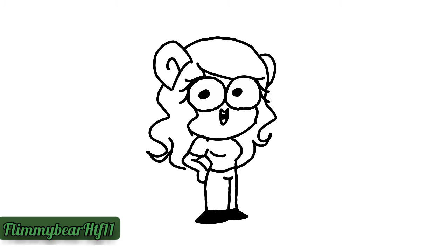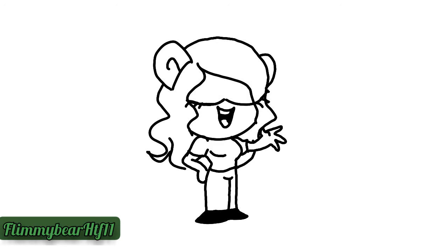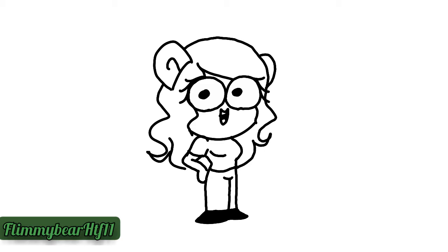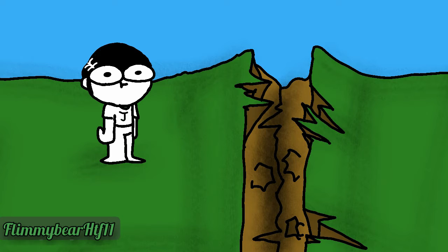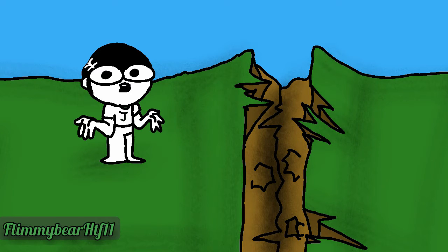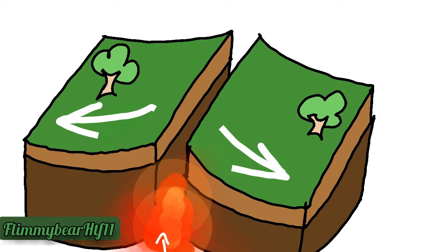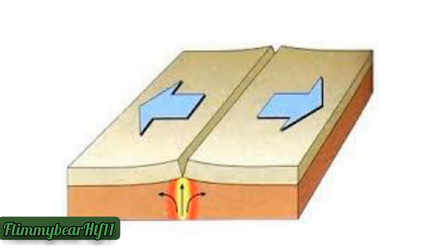Hey guys, this is Blimey Bear and right now we're gonna talk about the types of boundaries. Hey Jeremy, it's your turn. Divergent boundaries — plates move apart. That's divergent, resulting in welling of material from the mantle to create new sea floor.